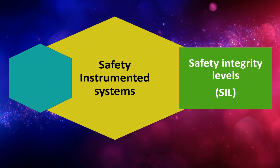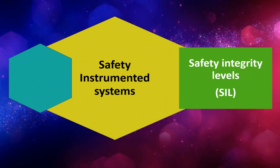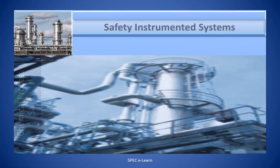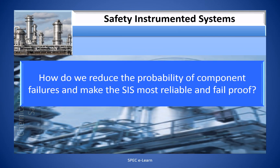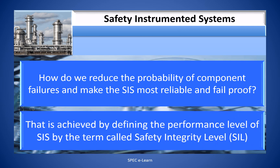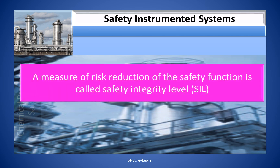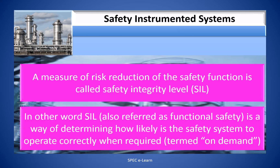Safety Integrity Level. How do we reduce the probability of common failures and make the SIS more reliable? That is achieved by defining the performance level of the SIS using the term Safety Integrity Level, or SIL. A measure of risk reduction of the safety function is called Safety Integrity Level — also referred to as Functional Safety — and is a way of determining how likely the safety function is to operate correctly when required.